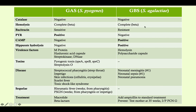Group B strep causes infection in neonates. It is the number one cause of neonatal meningitis, the number one cause of neonatal sepsis, and a major cause of neonatal pneumonia. There are no sequelae for group B strep.